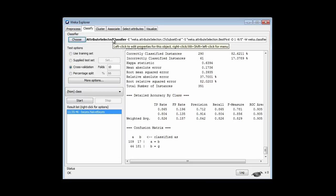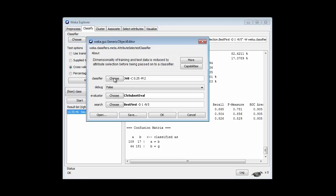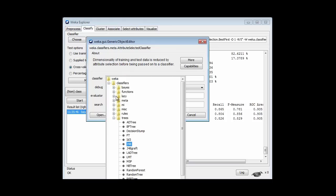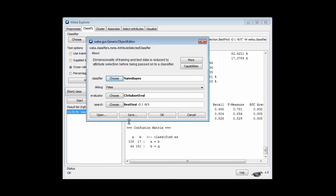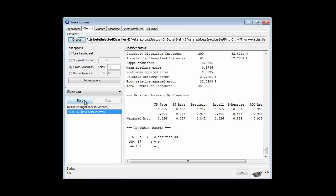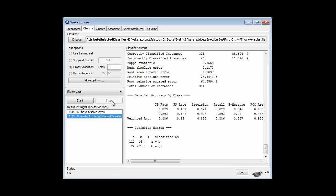Within that, remember, we can select a classifier. We're going to choose Naive Bayes. We're also going to choose a subset evaluator. What we're going to use is the default CFSSubsetEval and the search method. I'll just use the default search method. Let's run that. Now we get 88.6%, which is a lot better, so Attribute Selection has really helped here.